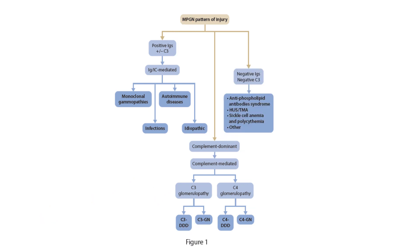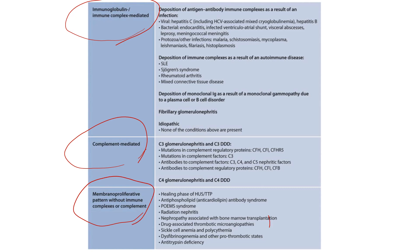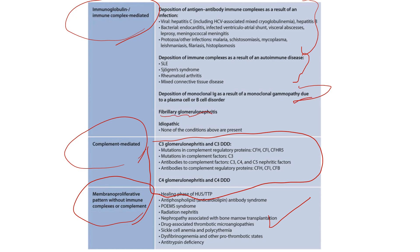The third category is when you find the MPGN pattern under the microscope but find neither immunoglobulin nor complement deposits. This may be caused by antiphospholipid syndrome, sickle cell anemia, polycythemia, and many other causes. Broadly speaking, MPGN patterns can be classified by etiology into: immunoglobulin/complement-mediated, complement-mediated only, and immunoglobulin-negative/complement-negative.